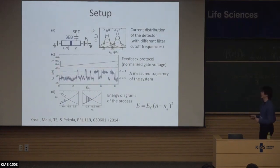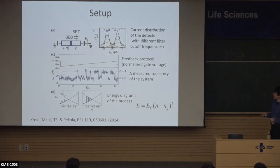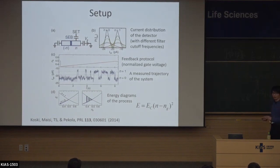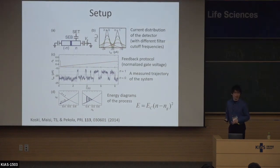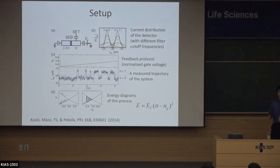What we wanted to implement is exactly this protocol by using a so-called single electron box. The details are not very important, but this is the device — we can distinguish the number of electrons inside this island. We consider the number of electrons n equals 0 or 1 as the two-level system.